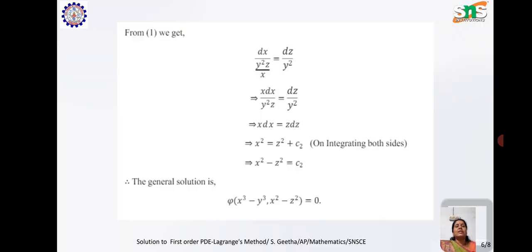On integration, we get x²/2 = z²/2 + c₂/2, which implies x² = z² + c₂. Therefore, c₂ = x² - z².